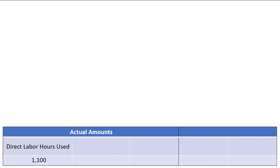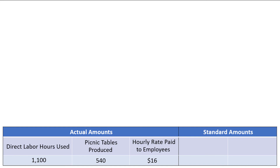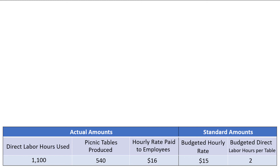Now let's look at how you would calculate the direct labor rate and efficiency variances with an example. Continuing with Ellison Enterprises producing picnic tables, in this period the workers worked for 1,100 hours to produce 540 tables. The company paid an hourly rate of $16 per hour, although their standard costing system budgets the hourly rate at $15 per hour. The standard costing system also budgets that each picnic table requires two direct labor hours to produce. Our goal is to calculate the total direct labor variance and how it is split between the rate and efficiency variances. If you understood the direct material variances, the labor variances are almost identical with small adjustments in terminology.